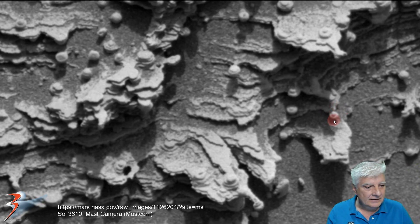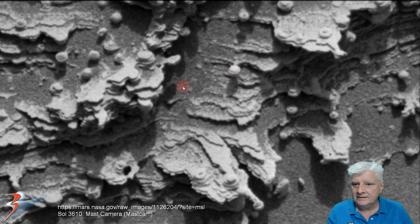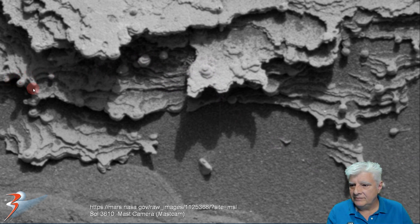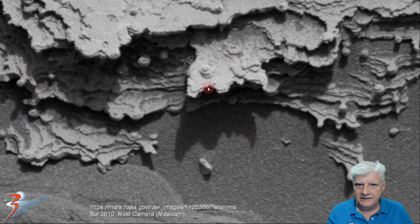They look like they're slightly suspended off the surface. Check that one out specifically — could there be a stem underneath that we can't see in this top-down view? And there again we're looking at what looks like fungus or mushrooms. Or like I've speculated before, could these be fossilized shells?